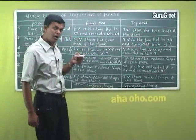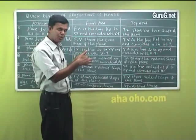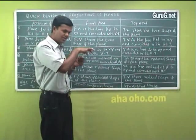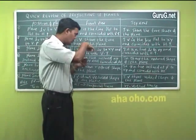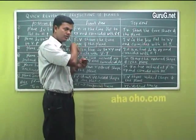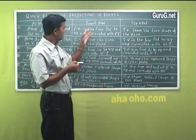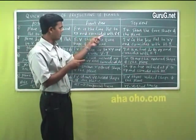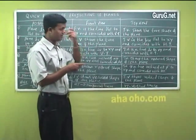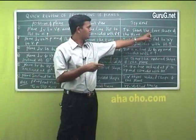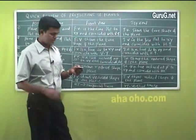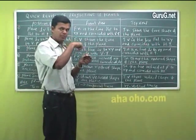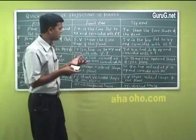So the front view is a line parallel to XY and coincides with the vertical trace. For the top view, when the plane is in this position — perpendicular to VP and parallel to HP — the top view is the true shape of the plane. You can draw the full shape: it is a rectangle. That is condition number one.